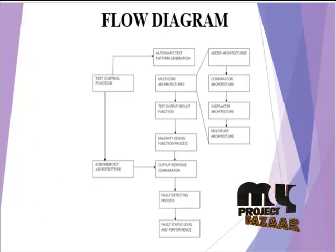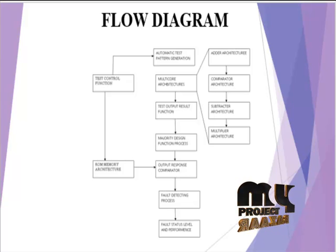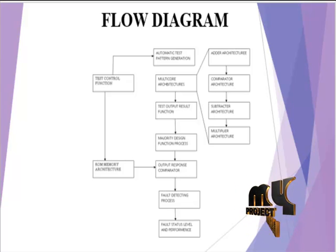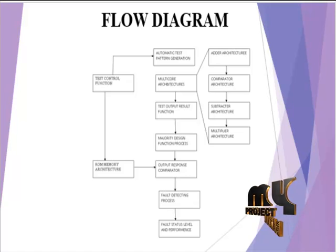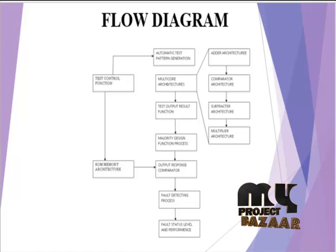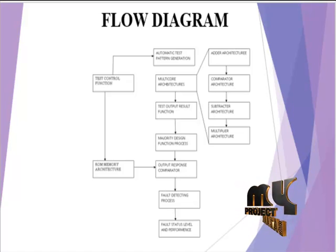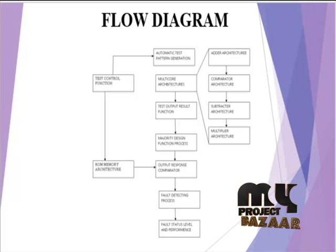Now we can see our product flow diagram. In our process, we first implement the multi-core architecture. In the multi-core architecture, we split into four types: addition, comparator, subtraction, and multipliers.